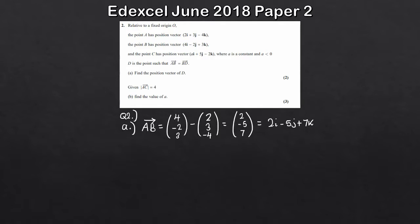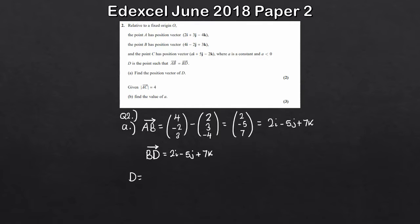But we know D is the point such that the vector AB is equal to the vector BD, so in other words we also know the vector BD is equal to 2i minus 5j plus 7k. So we can use this fact. We don't know the position vector for the point D — that's what we're going to work out. So let's take a generic example: say D has the position vector Ai plus Bj plus Ck. We can use the position vector of point D minus the position vector of point B, which should be equal to this.